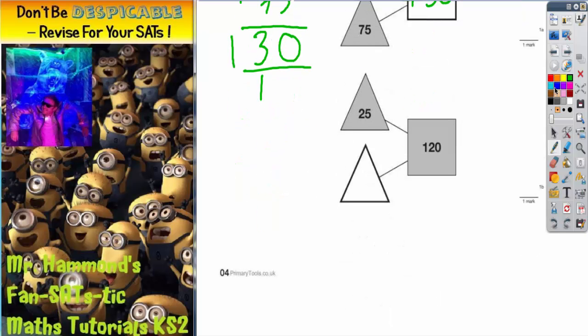Now then, for this bottom one, remember, it's triangle plus triangle equals the square. So 25 plus whatever's in here must equal 120. But we already know the square, so we've got to work in reverse this time. So if we start with 120 and subtract 25, whatever's left will go in here.